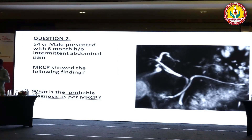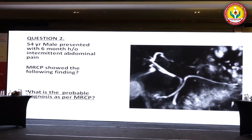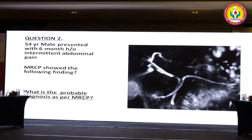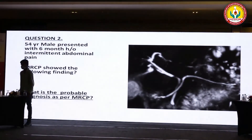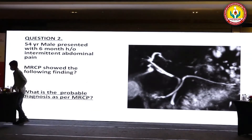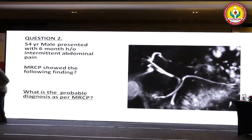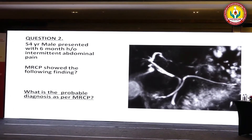Second question: a 54-year-old male presented with history of six months of intermittent abdominal pain. This is the MRCP image. Depending on the MRCP, what is the probable diagnosis? What can you see in this MRCP picture?